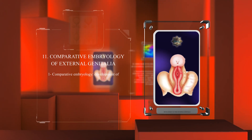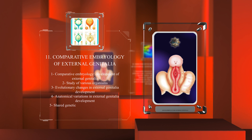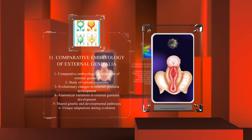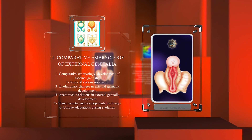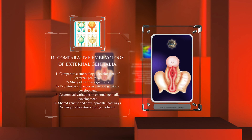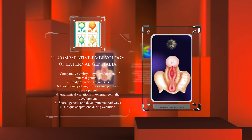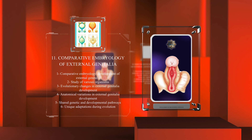Comparative embryology examines the development of the external genitalia across different vertebrate species. By studying various organisms, scientists can gain a deeper understanding of the evolutionary changes and anatomical variations in external genitalia development. This comparative approach provides valuable insights into the shared genetic and developmental pathways, as well as the unique adaptations that have occurred during the course of evolution.